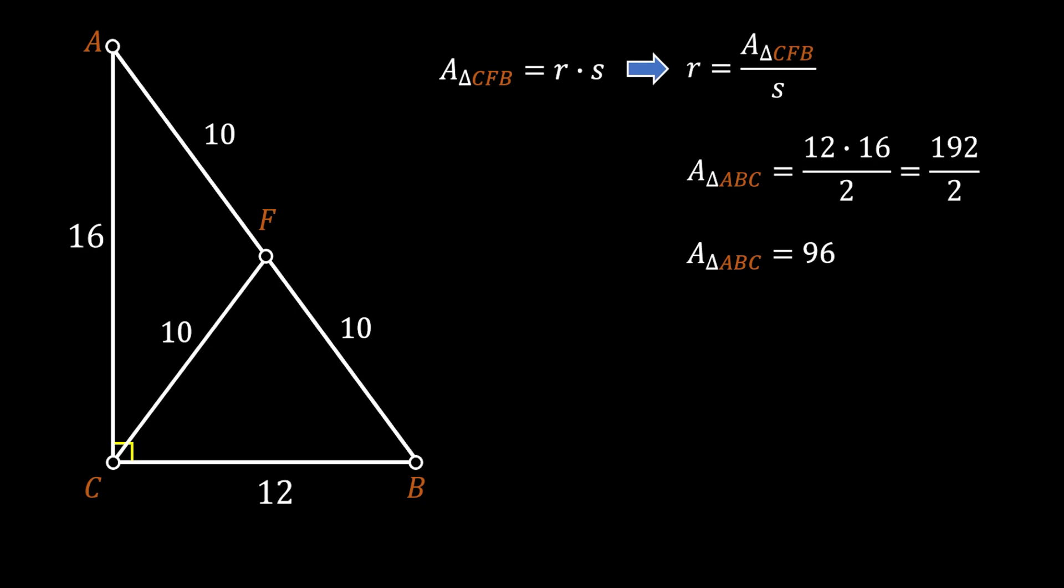Now, let's set our attention to the line CF. This line is actually called the median of the triangle. The median of a triangle is a line segment joining the vertex of the triangle to the midpoint of its opposite side. It basically bisects the opposite side, dividing it into two equal parts.